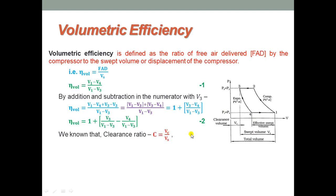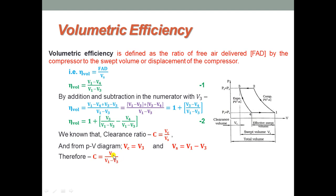The clearance ratio C is defined as Vc over Vs — that is, clearance volume over swept volume. From the PV diagram, Vc equals V3 and Vs equals V1 minus V3. Therefore, C equals V3 over (V1 minus V3). Substituting into the volumetric efficiency expression, V3/(V1 minus V3) is replaced with C, giving the expression: 1 plus C minus V4/(V1 minus V3), which is equation number 3.